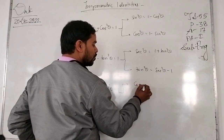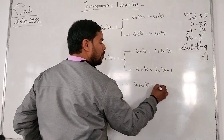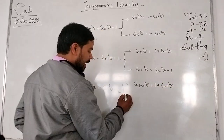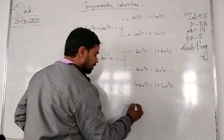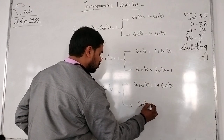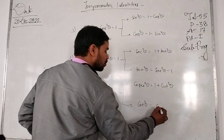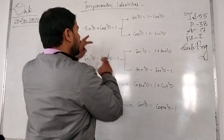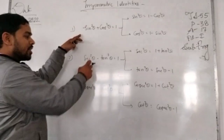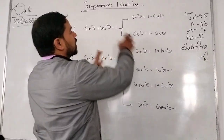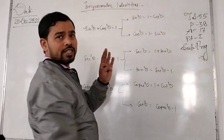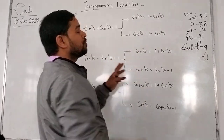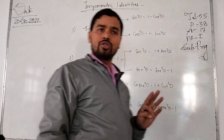And from the third identity, we get cosec squared theta equal to 1 plus cot squared theta, and cot squared theta equal to cosec squared theta minus 1. These are generally the three identities from which 6 Pythagorean ratios are derived.